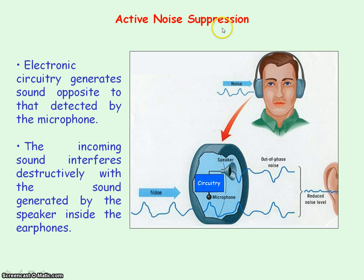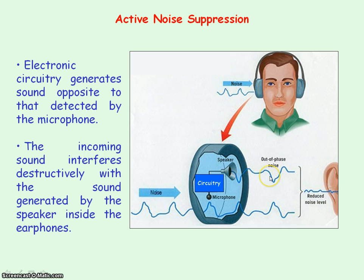There are headphones that actively suppress — that is, reduce — sounds. This can be particularly important if you want to protect your ears from loud sounds. For example, drivers in supersonic cars wear these headphones so they won't get deafened by sounds from the engine. Inside the headphones is a microphone that picks up the incoming sound wave. Electronic circuitry then reverses the sound pattern, and a loudspeaker inside the headphone transmits the antiphase sound, which interferes destructively with the original incoming sound wave, so that a minimum sound level reaches the ears.